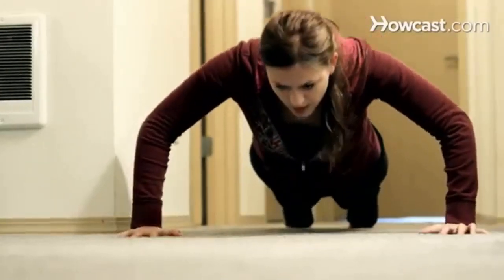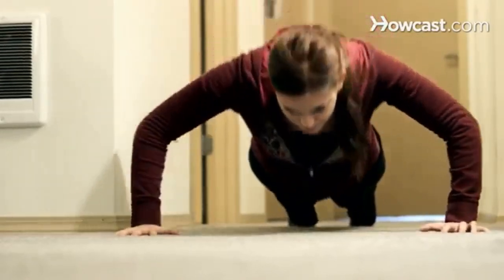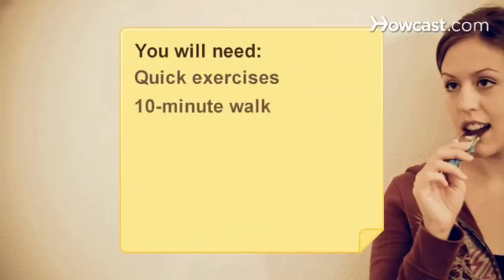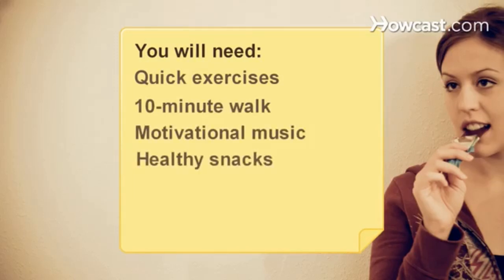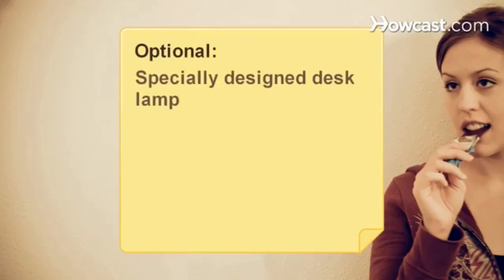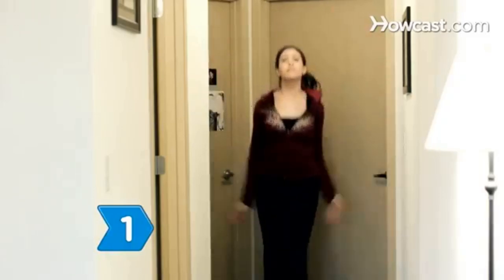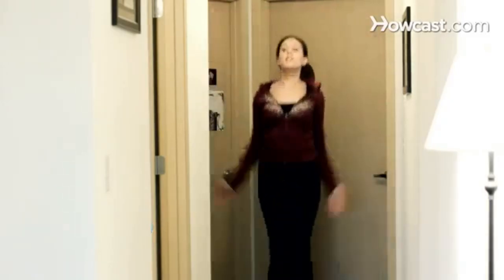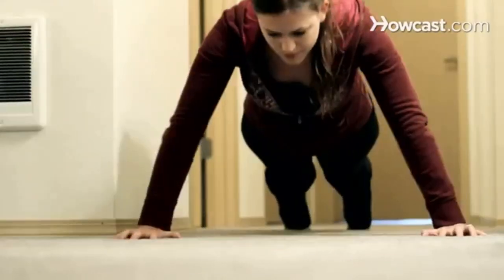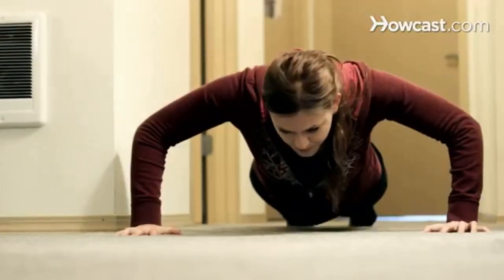How to Get a Quick Energy Boost. If you find yourself feeling worn out, break free of those doldrums and give yourself back your pep. You will need quick exercises, a 10-minute walk, motivational music, healthy snacks, and happy friends. Step 1. Get moving with some quick exercises like jumping jacks or push-ups wherever you are. Bursts of activity will increase your heart rate and blood flow to your brain for a quick pick-me-up.